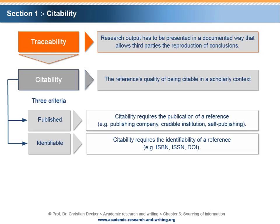Identifiability can also be achieved by describing a reference with distinct information such as name of author, title of reference, name and address of publisher, place of publication, date of publication, etc.